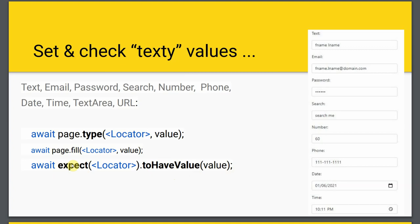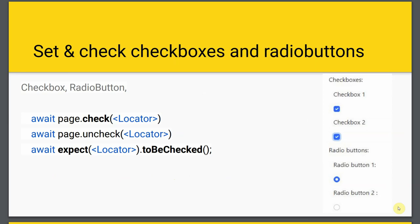For checkboxes and radio buttons: checkboxes can have one or more checked, while radio buttons are exclusive - only one can be selected at a time. For these you'll want to use page.check to set them, or page.uncheck if you want to unset one you previously set. To check the value you use the expect function with the matcher toBeChecked.